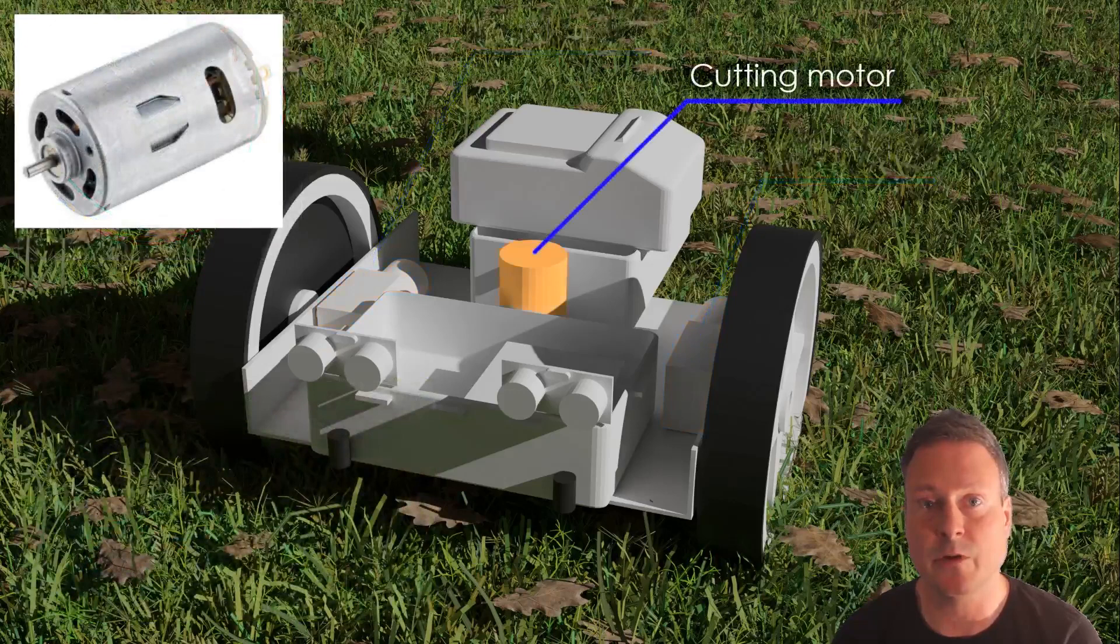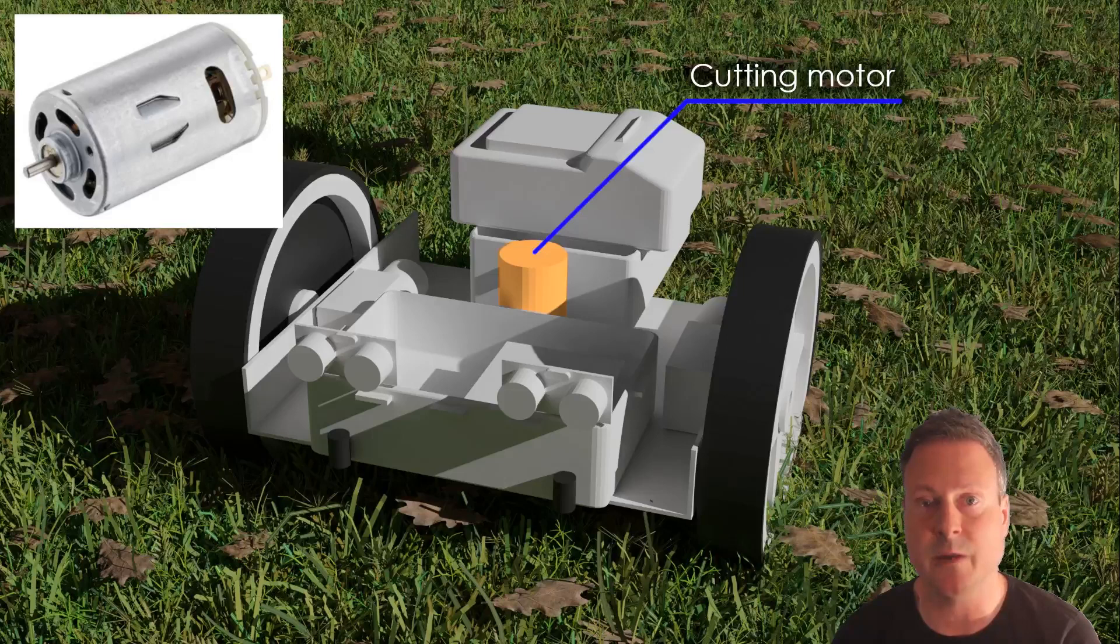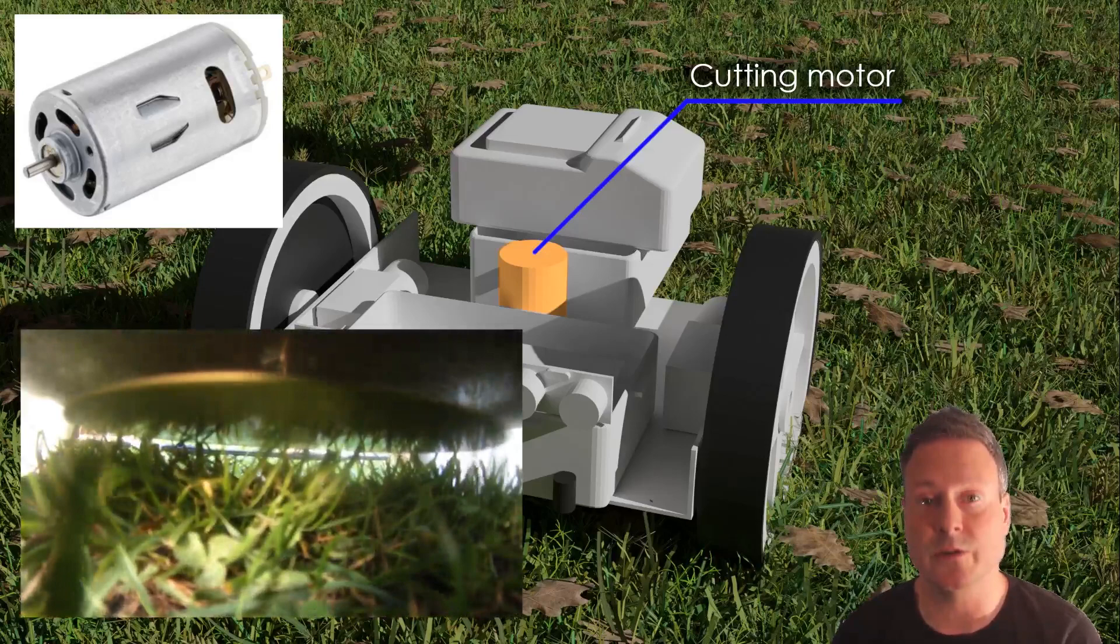The cutting motor is a high rpm DC motor that rotates a metal plate with three cutting knives at up to 7,000 rpm.